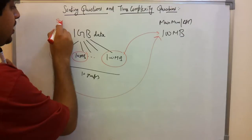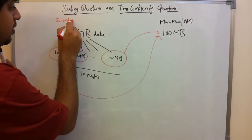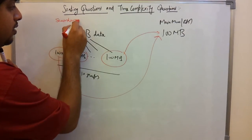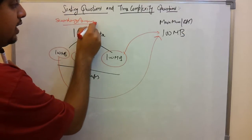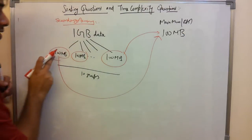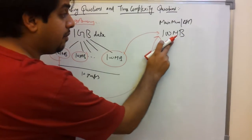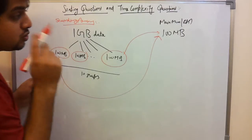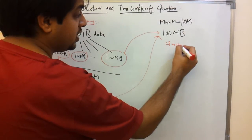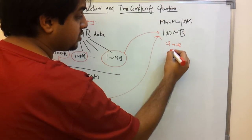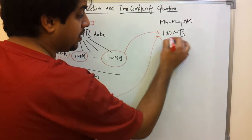This is secondary memory — your hard disk. You can load 100 MB of data into main memory and sort it there using quick sort, merge sort, selection sort, insertion sort, or whatever technique you choose.